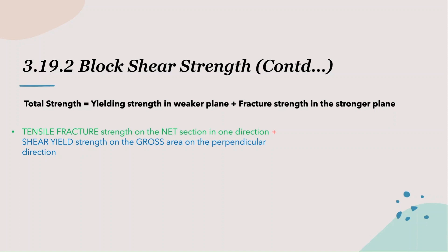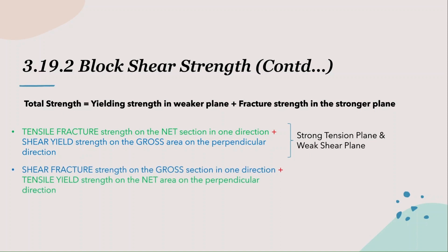This is the first equation. The green text refers to the tension plane and blue text refers to the shear plane. It reads: the tensile fracture strength on the net section in one direction, plus the shear yield strength on the gross area in the perpendicular direction. The uppercase terms read 'tensile fracture' and 'shear yield,' meaning the tension plane is the stronger plane and the shear plane is the weaker plane, because the shear has yielded but it was the tensile fracture that led to block shear failure.